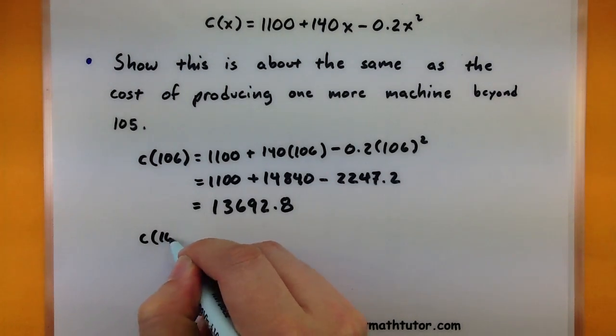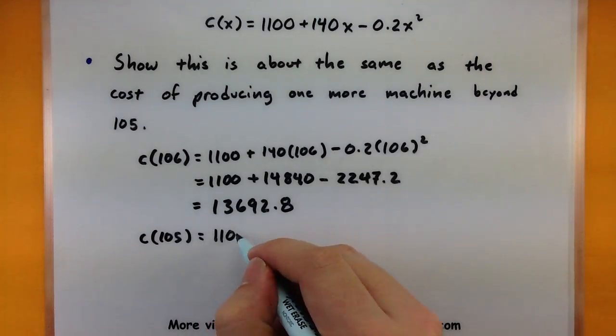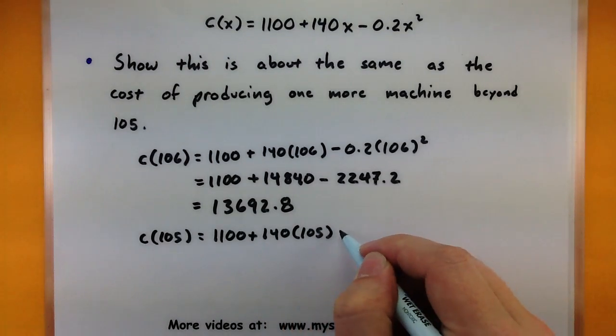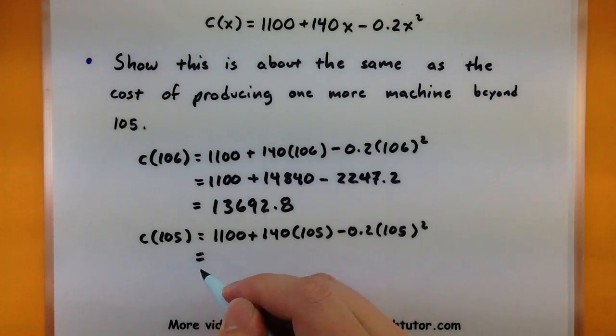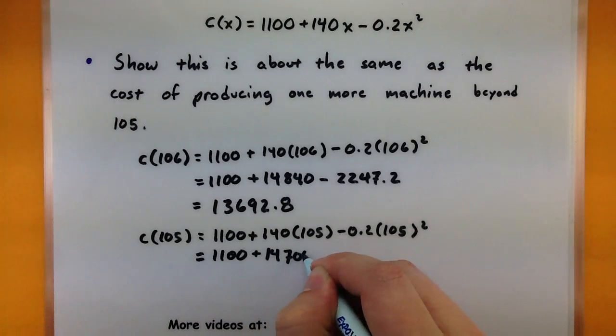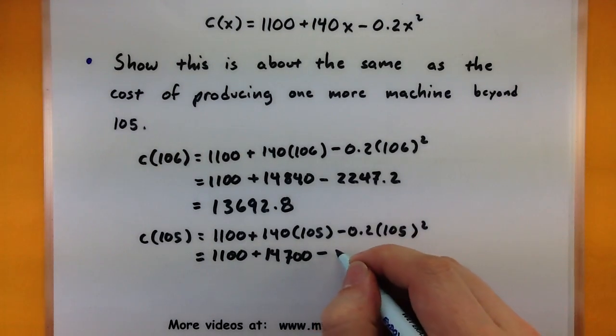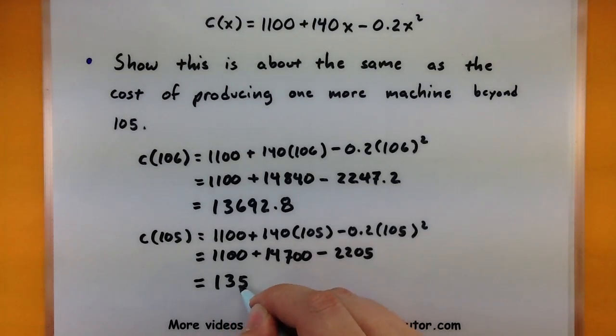So that's pretty good. Now let's figure out what is the cost of producing 105, exactly one less. So same as before, we'll start with our cost function, plug in the 105. So working on this, 1100, 140 times 105 would be 14,700. Then I have 0.2 multiplied by 105 squared, 2205. And combining all of these together, 13,595.